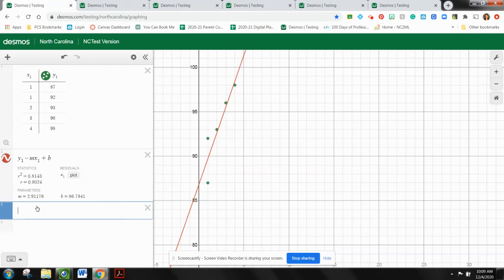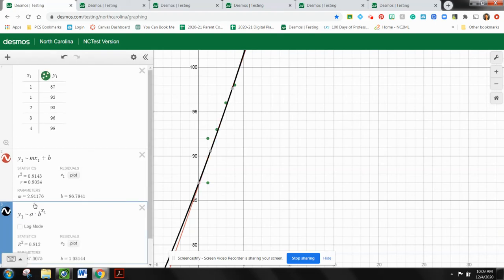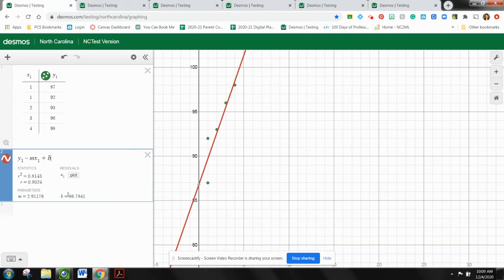So I'm going to say, let me just check and see if exponential might fit better. All right. Looking here at the r squared values. This is 0.812. This is 0.814. So I'm okay in this case, sticking with my linear function.